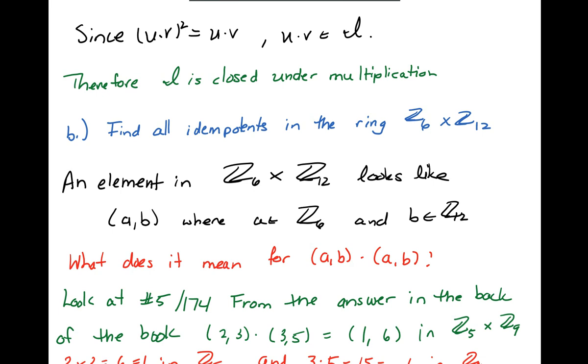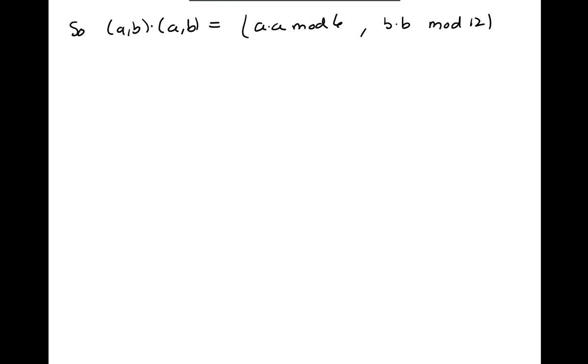Is this a useful way to do things? I think so. It's always worked for me. So what it means is for our specific problem when we take the ordered pair (a,b) times the ordered pair (a,b), what we mean is we take the product of the first two elements in mod 6 and the product of the second two elements in mod 12.